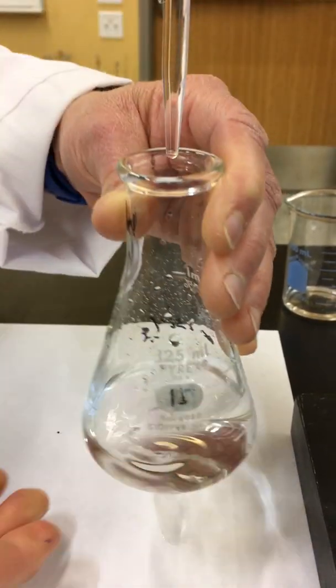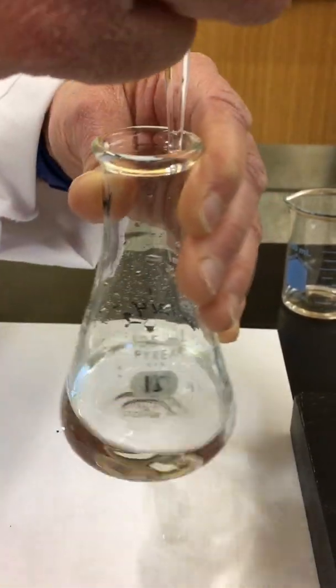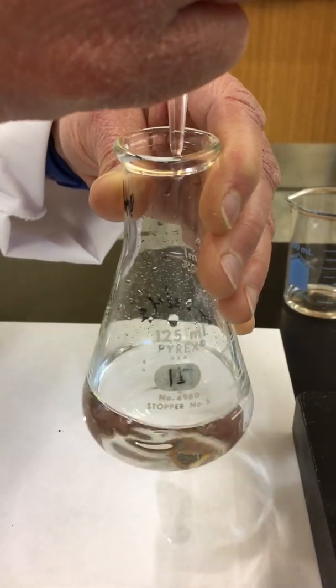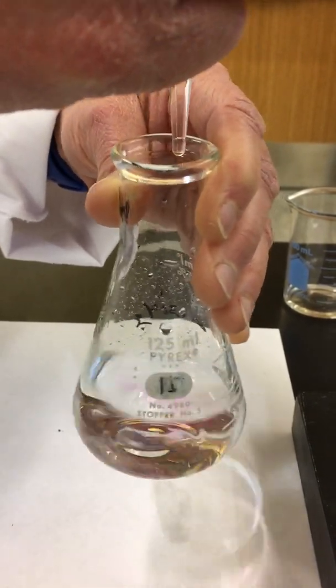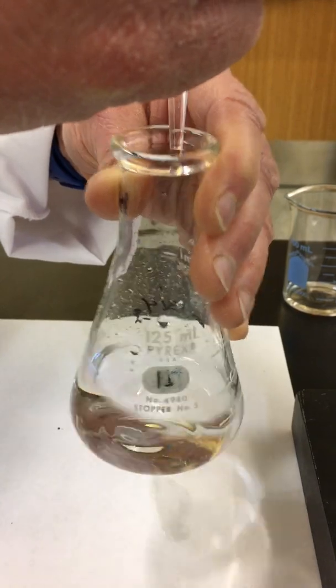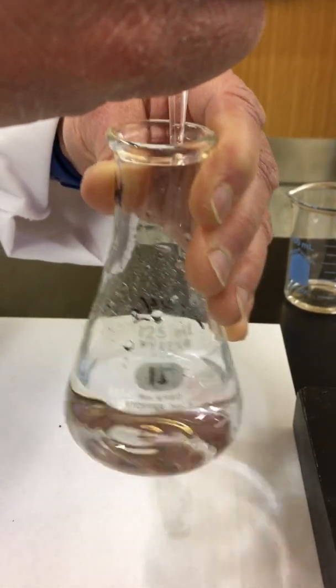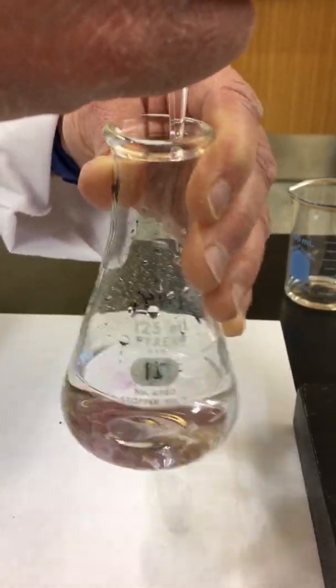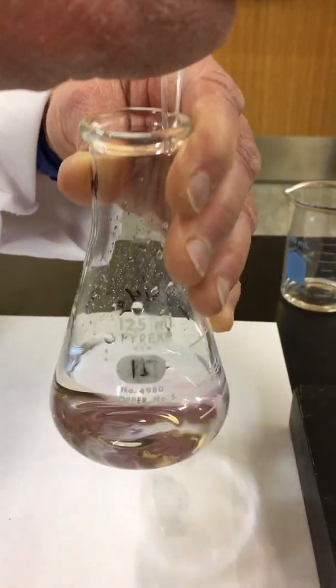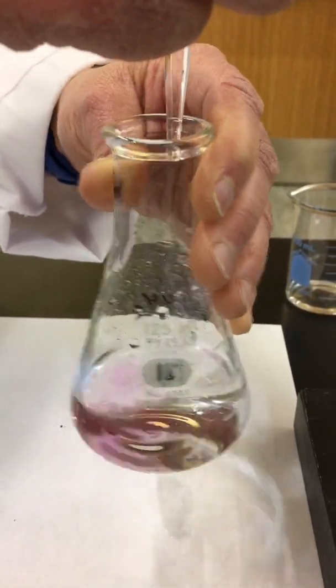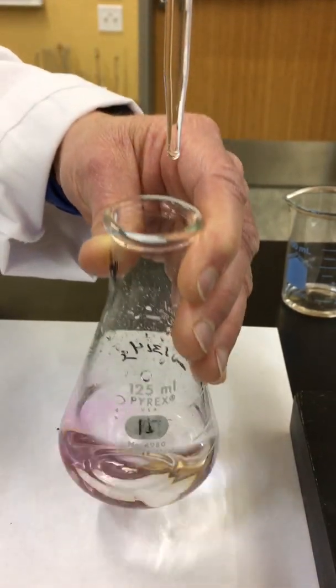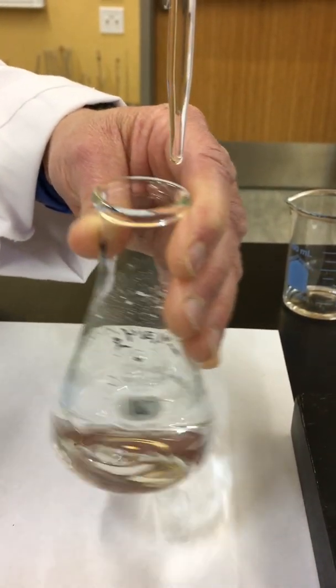As you can see, the pink color is starting to last longer and longer. So when we get to this step, we want to start adding the sodium hydroxide a little bit slower, to make sure we don't add too much and go past the endpoint of titration. Notice by just adding these couple of drops, that pink color is lasting a lot longer.